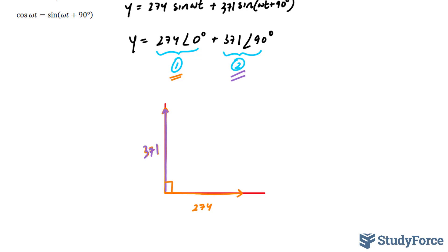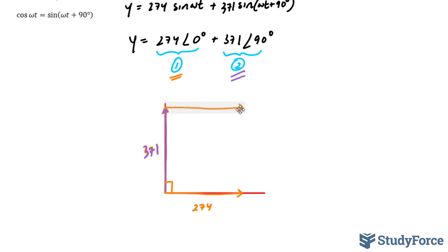Next, I have to add these two vectors. You can add vectors by using the tail-to-tip method: take one vector, place it at the head of the other, and your final resultant vector will be right here. We need to find out what this angle is and we need to find out its magnitude.